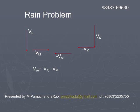On the right side figure, you notice at the head of vr, minus vm is constructed. The vector from the tail of vr to the head of minus vm, the inclined vector, is the relative velocity vector.